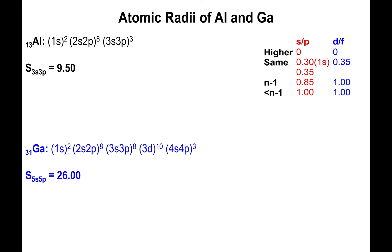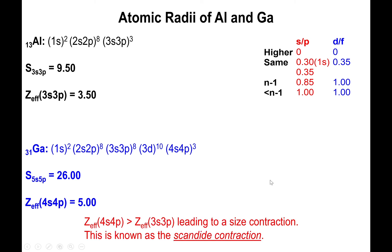Multiplying all the values together and adding them up will tell you that the shielding constant of aluminum is 9.50, and the one for gallium is 26.0. If you subtract this from the atomic number, which is 13 for aluminum and 31 for gallium, you find that the effective nuclear charge is 3.50 for aluminum and 5.00 for gallium. Since the effective nuclear charge of gallium is higher than that of aluminum, we predict that gallium will be smaller. So it's kind of interesting that this happens. This process is also known as the scandide contraction because gallium appears right after the first row of the transition metals, with scandium being the first element in the series.